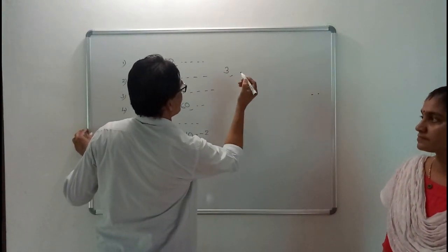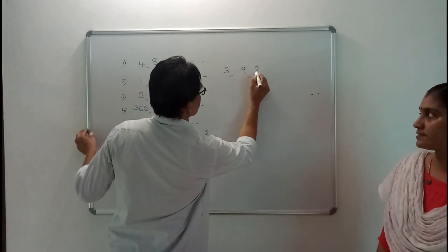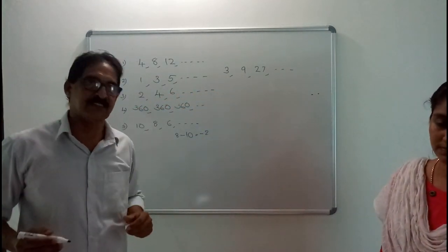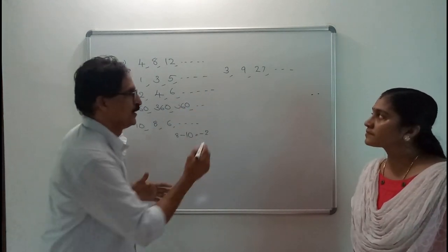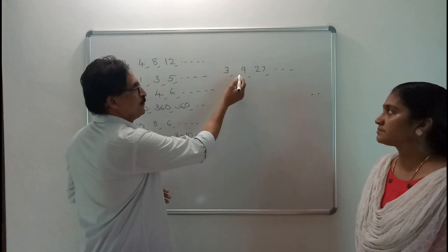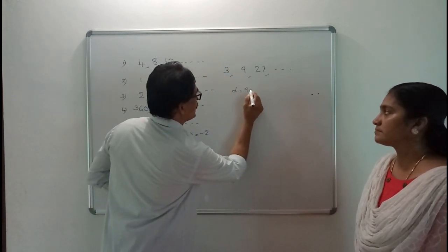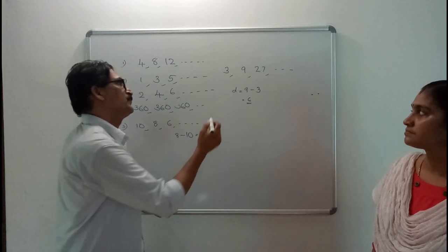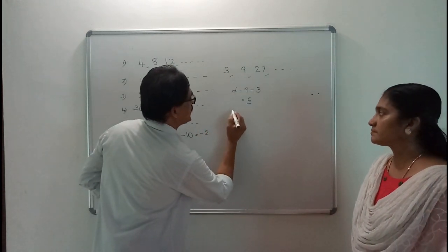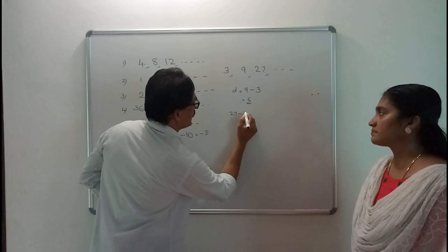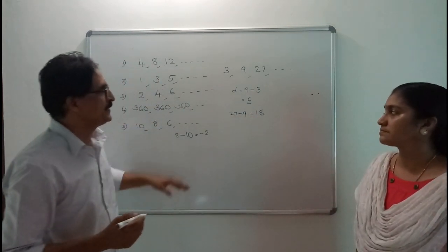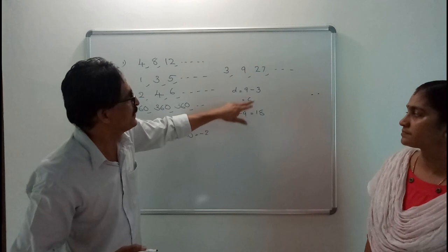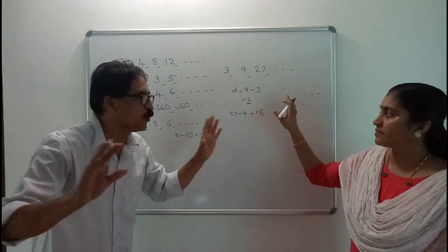Consider the sequence 1, 3, 9, 27, etc. Is this an arithmetic sequence? We can find the common difference. D is equal to the 2nd term minus the 1st term: 3 minus 1 is 2. But the 3rd term minus the 2nd term: 9 minus 3 is equal to 6. Again, the 3rd term minus the 2nd term: 27 minus 9 is equal to 18. You see, the 2nd term minus the 1st term is 2, whereas the 3rd term minus the 2nd term is 18. Therefore, there is no common difference, so this is not an arithmetic sequence.